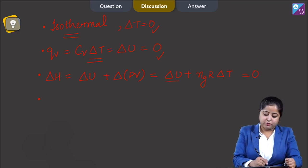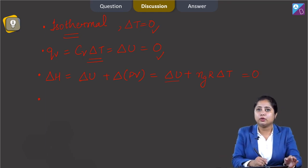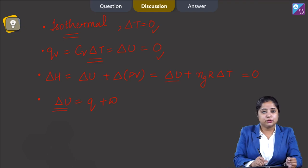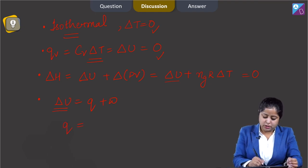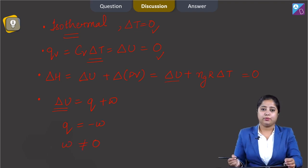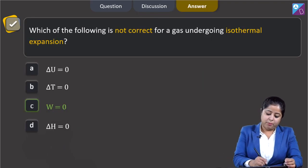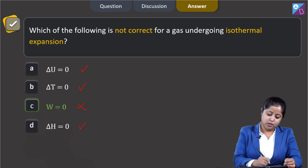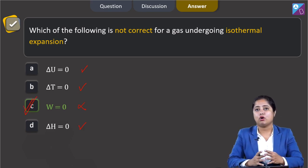According to the first law of thermodynamics, ΔU = Q + W. Since ΔU = 0, that means Q = -W, or we can say W is not equal to 0. So: ΔU = 0, ΔT = 0, ΔH = 0 are all correct, but W = 0 is incorrect. The correct answer is option C.